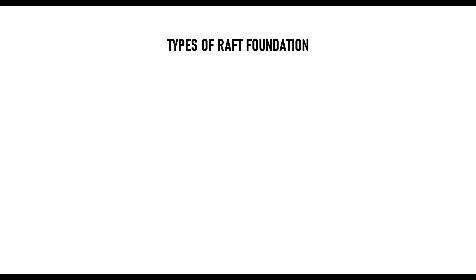The first type of raft foundation is the solid slab raft. This is simply a flat slab. The principle here is that we are converting the load of the superstructure and subjecting it to a solid slab — a slab not supported or assisted by any beam — and that slab spreads the load to the ground. We also have the solid slab with beams, which adds beams, and then we have the cellular raft.